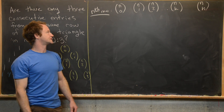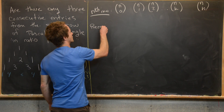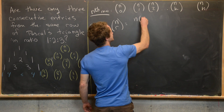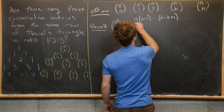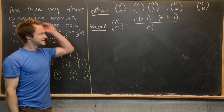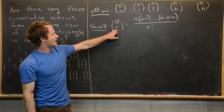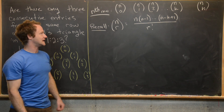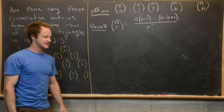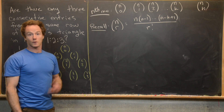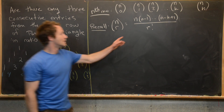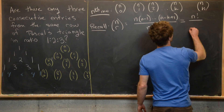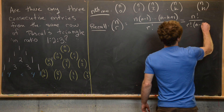We'll use the closed formula for a binomial coefficient. We recall that n choose r equals n times n minus 1 all the way down to n minus k plus 1, over r factorial. This definition works as long as you have a non-negative integer in the bottom. If you have a natural number up top, there's a more familiar way to write this: n factorial over r factorial times n minus r factorial.